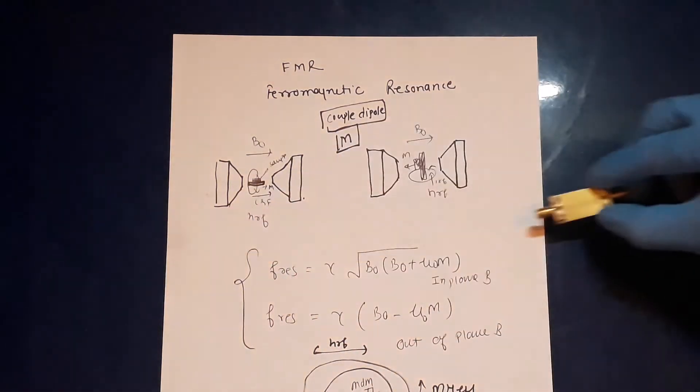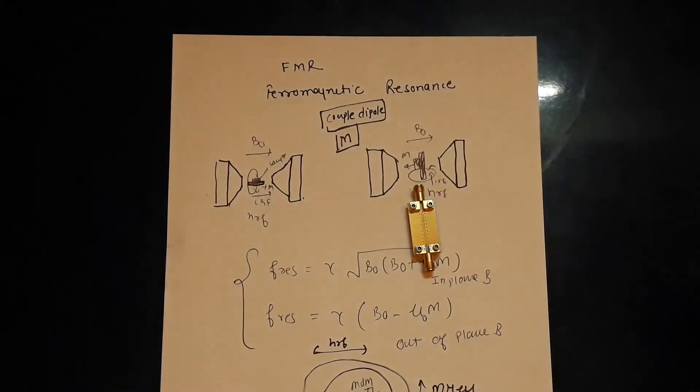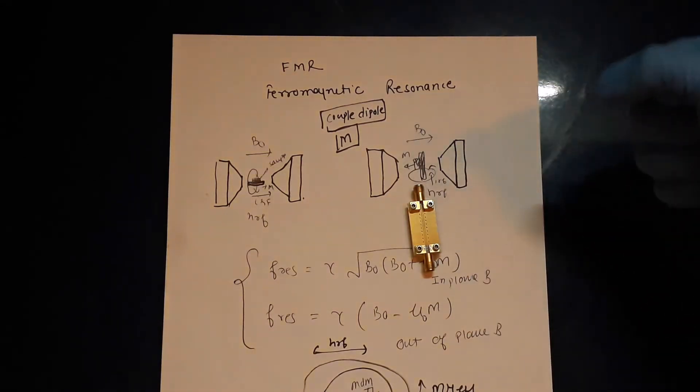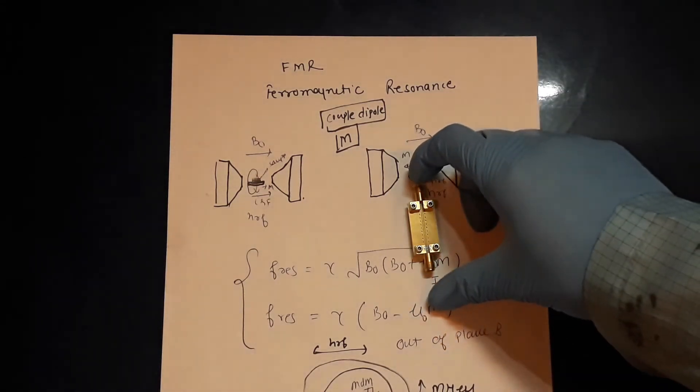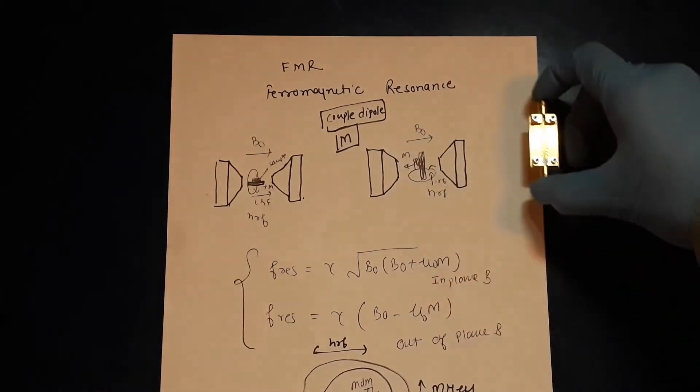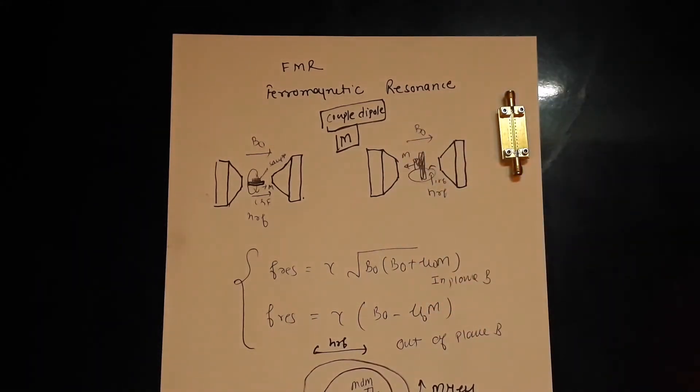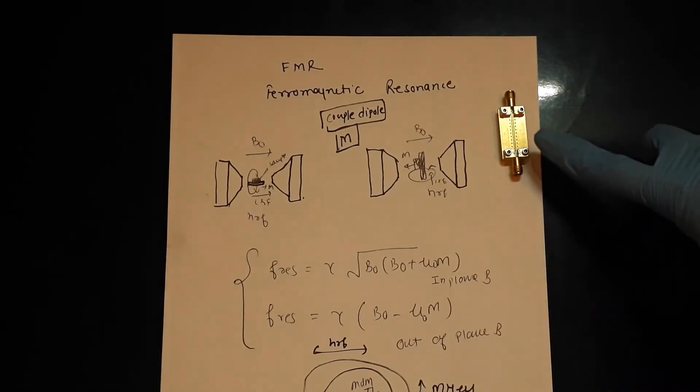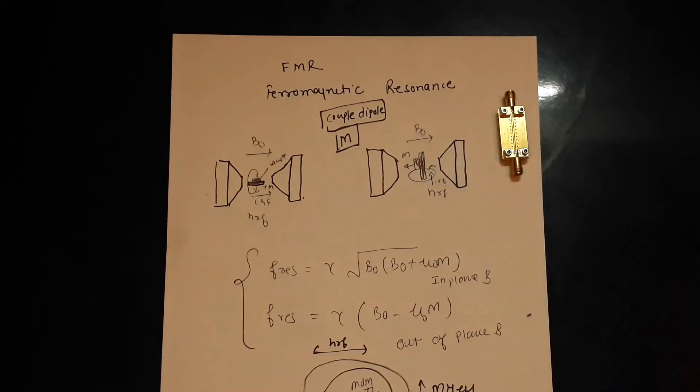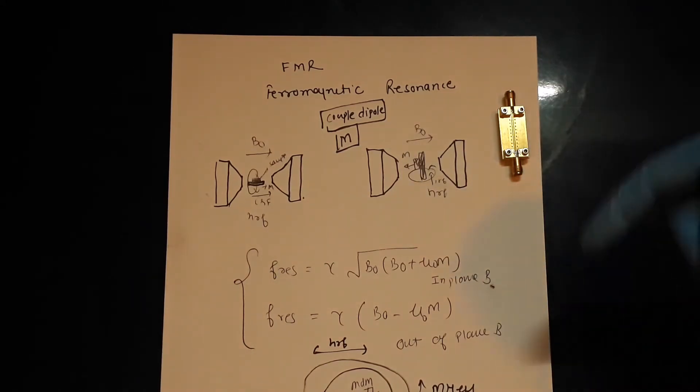In the other case you put your sample like this, your magnetic field is like this, your RF is like this. It's called out-of-plane geometry. All depends upon the direction of the magnetization. Depending upon in-plane magnetic field or out-of-plane magnetic field, the alternating magnetic field is what is changing here.